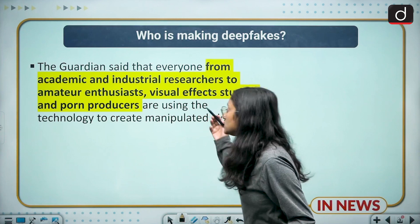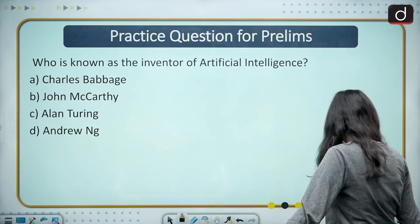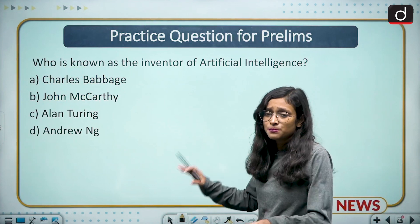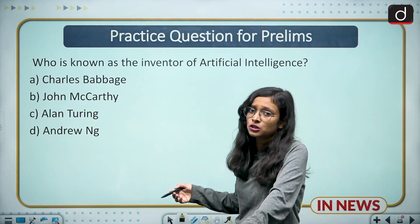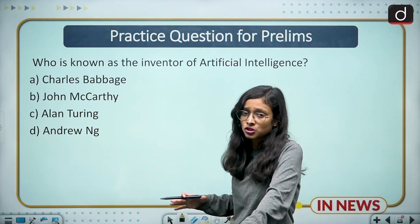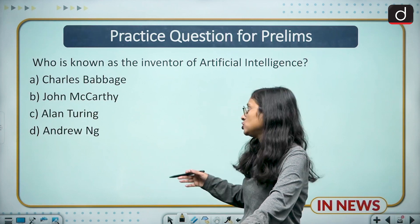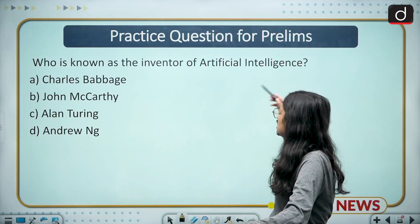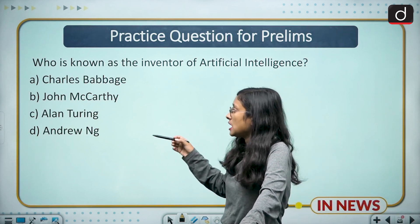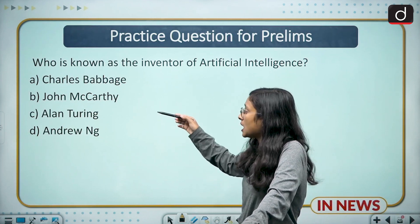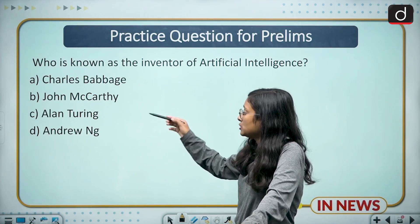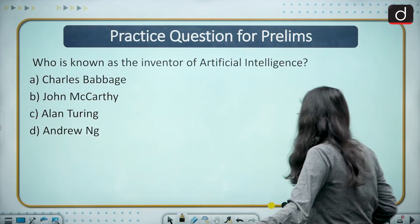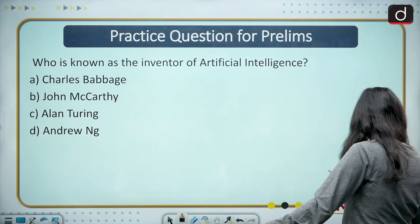Moving to the practice question: this question is related to AI, since our total discussion is based on AI. The question is: who is known as the inventor of artificial intelligence? Your options are: A — Charles Babbage, B — John McCarthy, C — Alan Turing, and D — Andrew Ng. You have to answer this in the comment section.